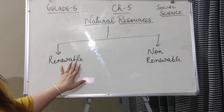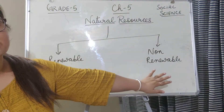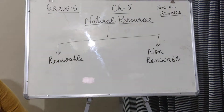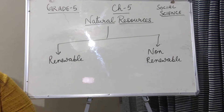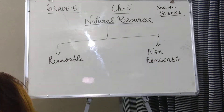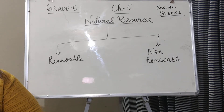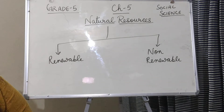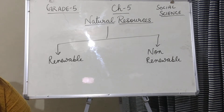Renewable resources are the resources which you can get back very easily, and non-renewable resources are the resources which, once finished, take so much time to get back. So this is the difference between renewable and non-renewable resources. Renewable resources are those which we can use again and again, and non-renewable resources are those which take so much time to get back if they get finished.